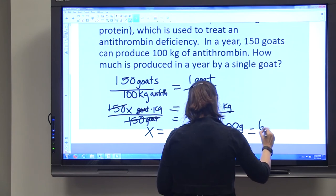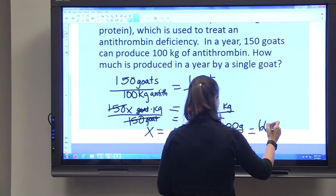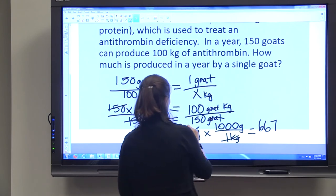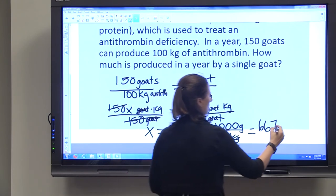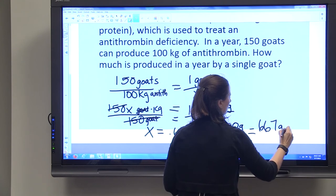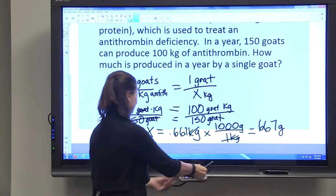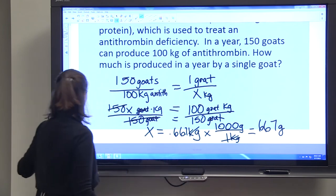And that will give you 667 grams of antithrombin produced by each goat.